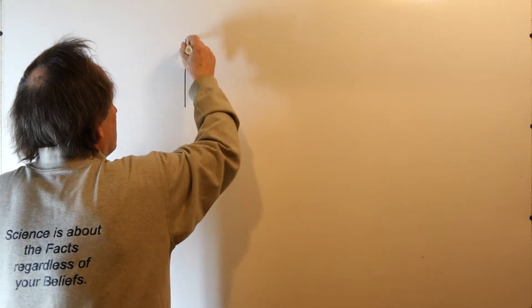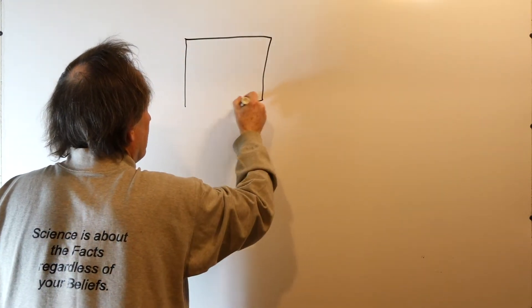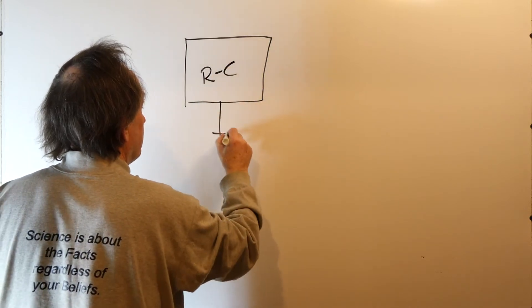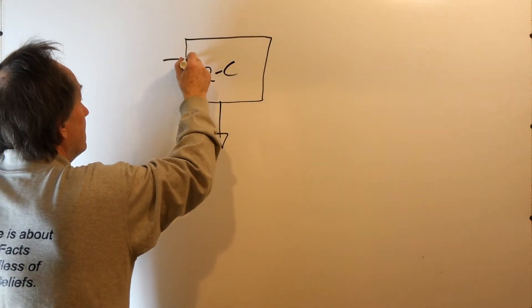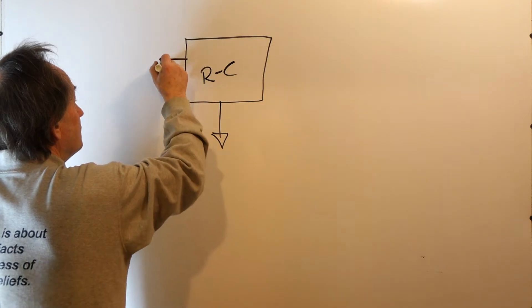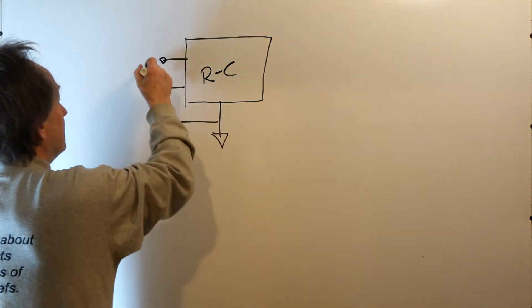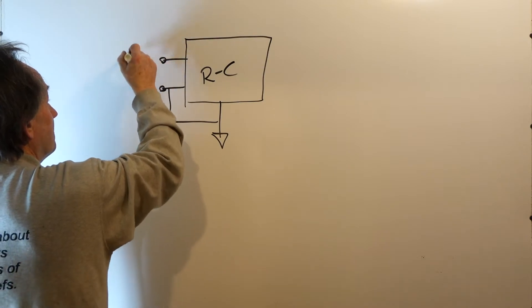Suppose you have a network comprised of resistors and capacitors. You have an RC network, and you define two nodes in that network as your input node, or your input terminal.